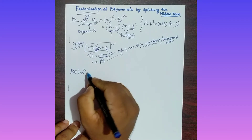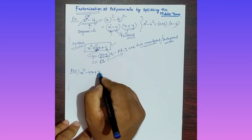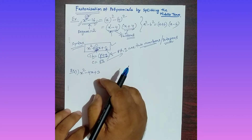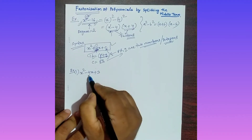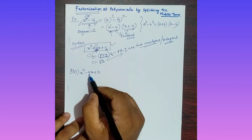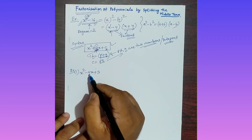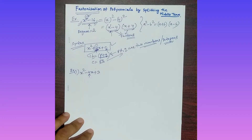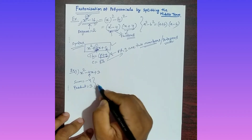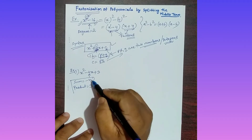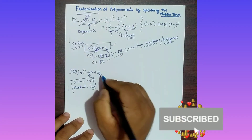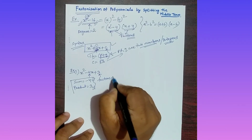Example 1: x² - 4x + 3. You have to factorize this polynomial by splitting the middle term. The middle term here is -4x. The logic is: you have to find two numbers whose sum is -4 and whose product is +3. To find those numbers, first find the factors of 3.